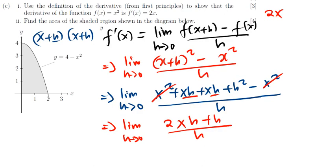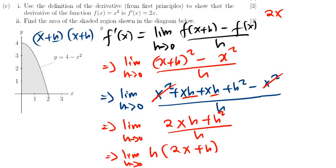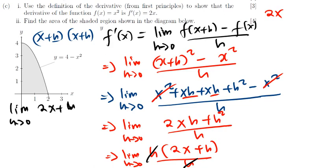I'll now factor out h. So I have the limit as h approaches 0 of h(2x + h) divided by h. The h in the numerator and denominator cancel, leaving the limit as h approaches 0 of (2x + h). Now plugging in h = 0 won't give undefined — it gives 2x + 0, which is 2x.